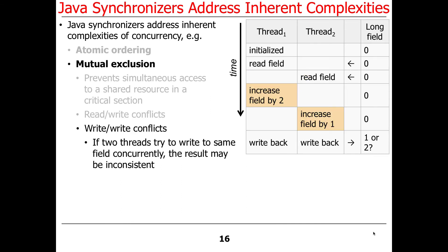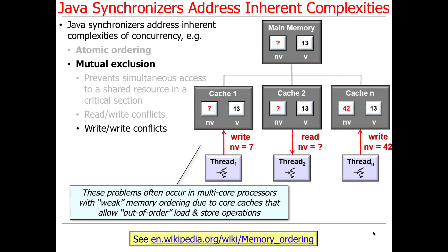There are also write-write conflicts. This occurs if two threads try to write to the same field concurrently, and the result may be inconsistent. Both threads start up, both read the value 0, thread 1 increases it by 2 and thread 2 increases it by 1, then they both write back at the same time. Is the value 1? Is it 2? Is it some other random value? That's a write-write conflict.